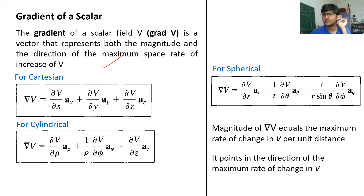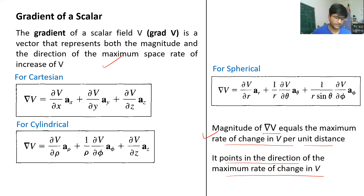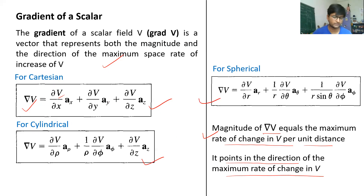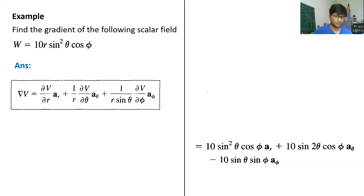The magnitude of del V equals the maximum rate of change in V per unit distance, and the direction is in the direction of maximum rate of change in V. For the Cartesian system, the gradient of scalar V is simply the del operator multiplied by this scalar function V. Similarly, there is a formula for cylindrical coordinates and a formula for spherical coordinates. This is the gradient of a scalar.